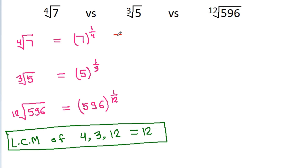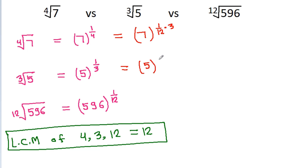So, 7 to the power 1 by 4 will be equal to 7 to the power 1 by 12 times 3. And 5 to the power 1 by 3 will be equal to 5 to the power 1 by 12 times 4. And this is 596 to the power 1 by 12.